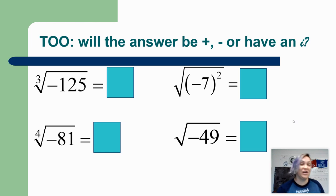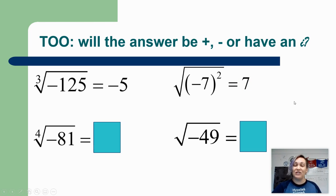All right, let's check your answers. So on the first one, I have an odd index with a negative sign. I'm going to expect my answer to be negative. My answer is negative 5. 125 is 5 times 5 times 5. Okay, the next one over is a little bit tricky. So negative 7 squared is actually positive 49. So this is actually taking the square root of positive 49, which means my answer is positive 7. So be careful with that.